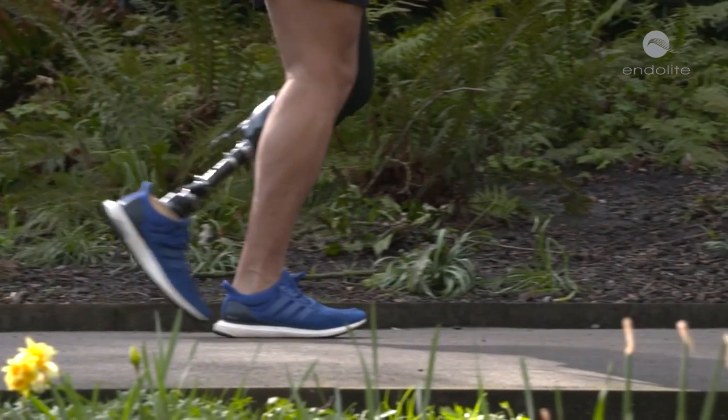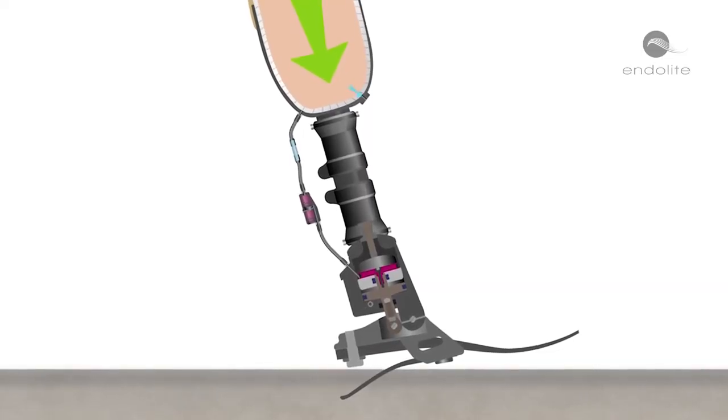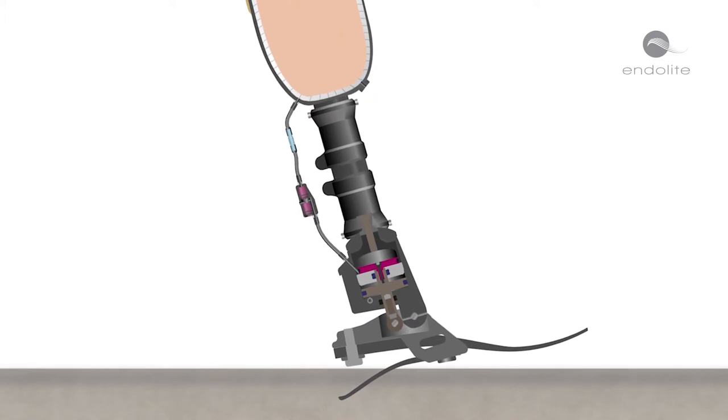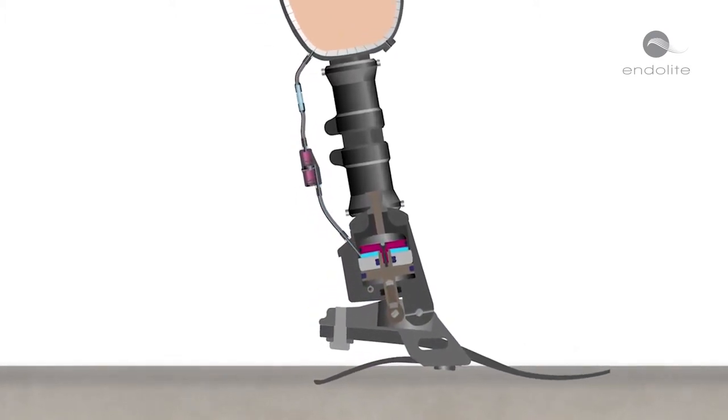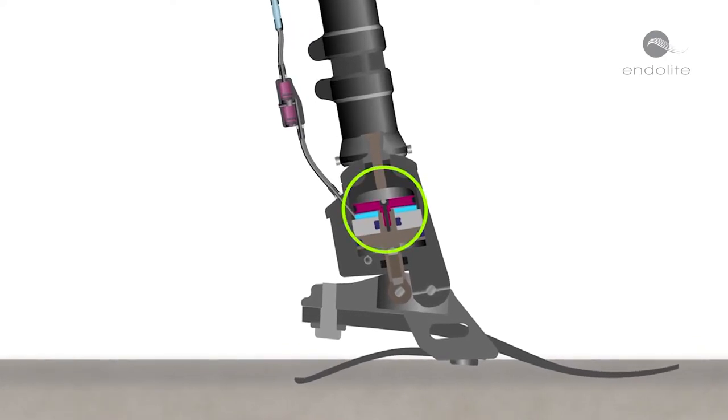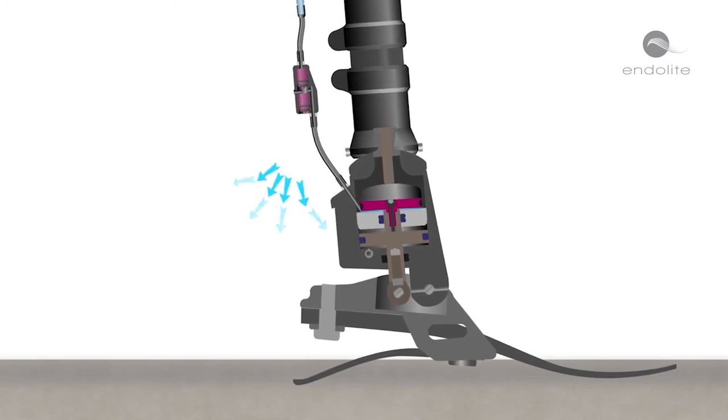With every step, the wearer presses their weight into the prosthesis, initially expelling air through a one-way valve. Simultaneously, the ankle plantar flexes, actively drawing air out of the socket. This air is held in the valve chamber and released into the atmosphere as the tibia progresses and the ankle dorsiflexes.